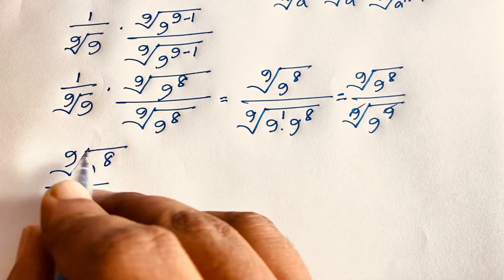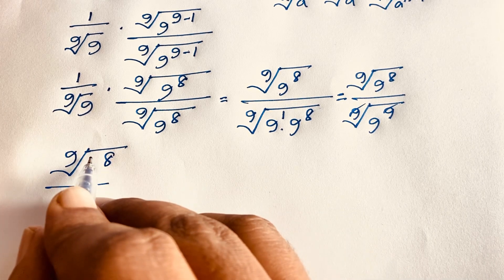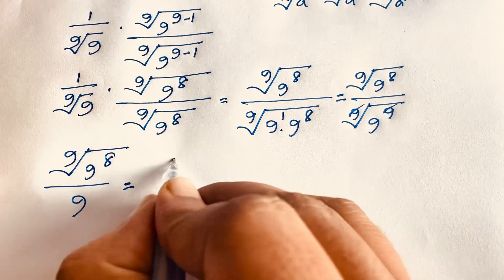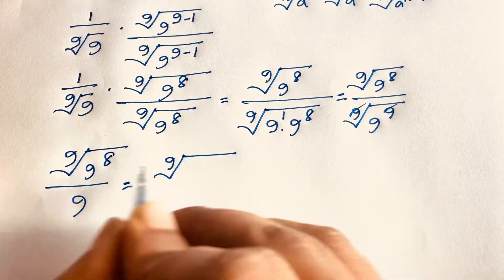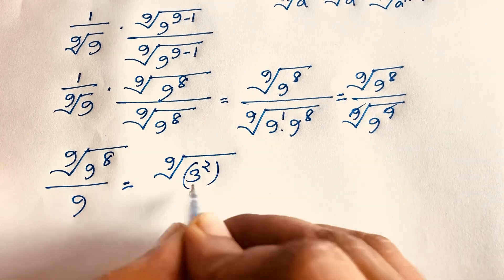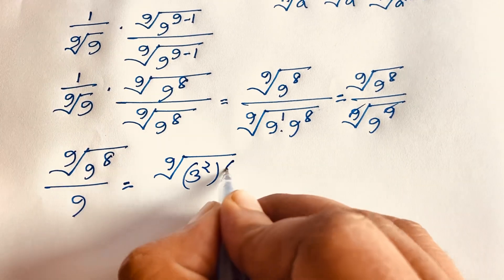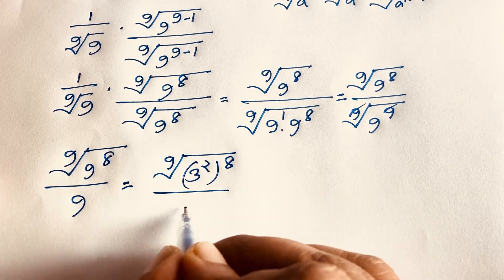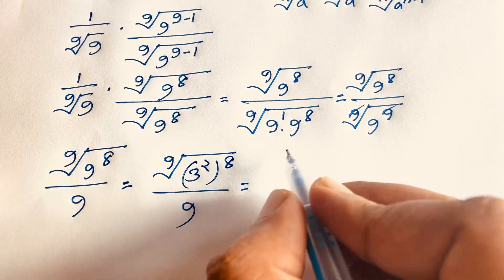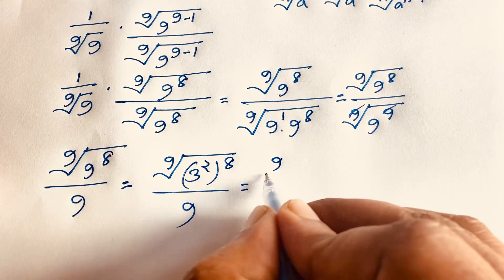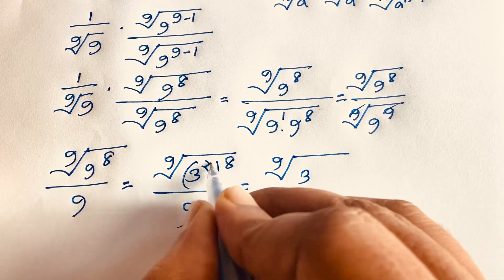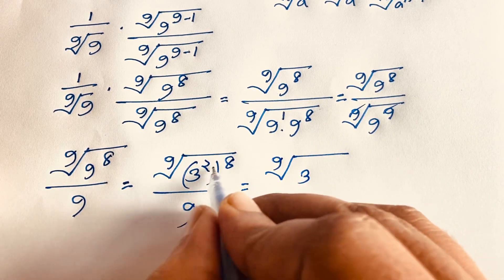Now evaluating further: 9 equals 3 squared, so the expression becomes the 9th root of (3²) to the power (8/9), which equals the 9th root of 3 to the power (2×8). By the exponential law, 2 times 8 equals 16.